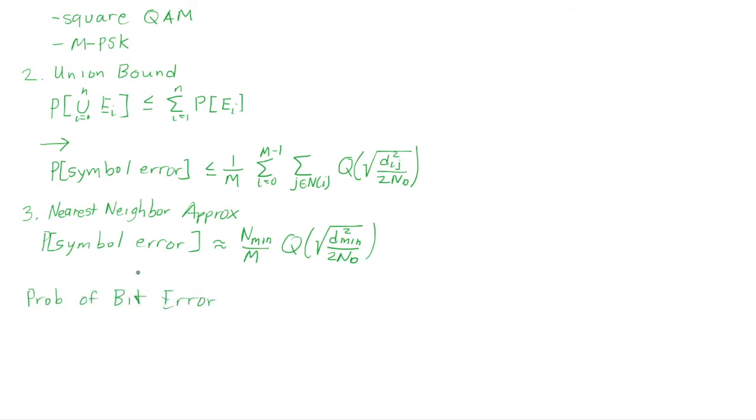Sometimes gets denoted in the book as the probability of error, but I'm going to use the probability of bit error very explicitly in my notes to make sure that you know I'm talking about the probability of bit error and not the probability of symbol error. We're going to assume that Gray coding is possible. Gray coding is that the neighboring symbols to a particular symbol are different by one bit, so that one symbol error causes approximately one bit error.